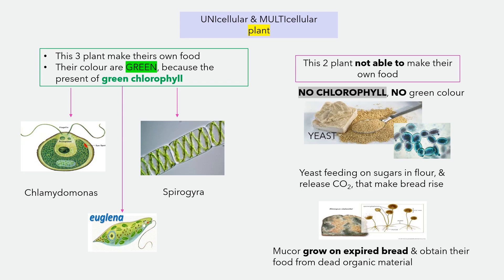Remember, chlamydomonas, spirogyra, and euglena have green chlorophyll, which allows them to absorb light and make their own food. There are two plants that are not able to make their own food because they have no chlorophyll — those are yeast and mucor.